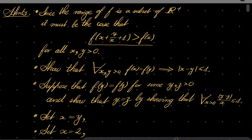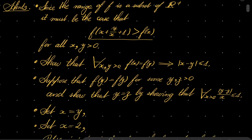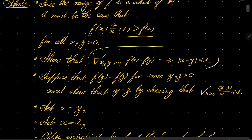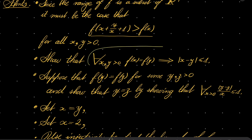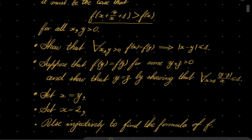And from there you should establish this crucial fact: that if the values of two arguments are the same, then these two arguments must be distant from each other by less than one or equal to one. It's the crucial observation.